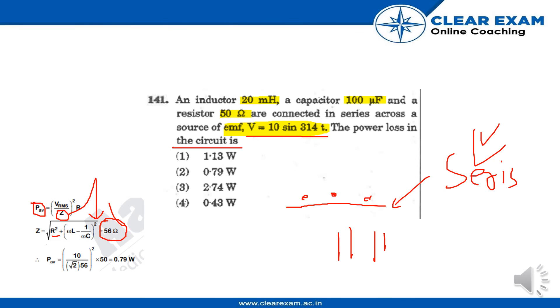Substituting this in the formula of power, P = (V_rms/Z)² × R. V_rms is 10, and Z is 56. So we can find the value as 0.79 W.